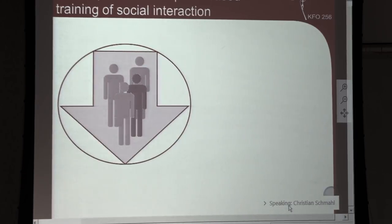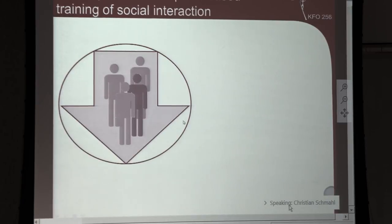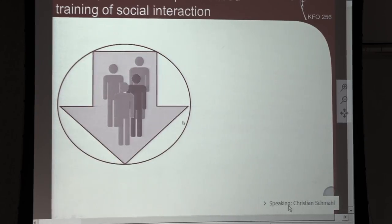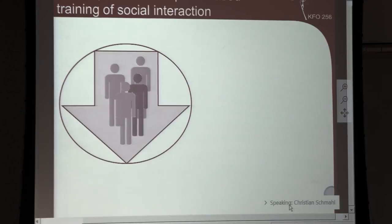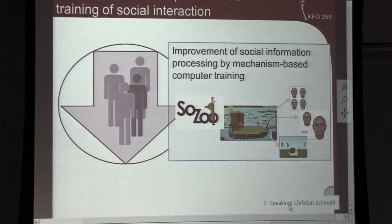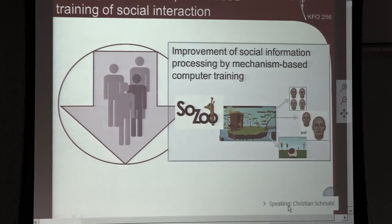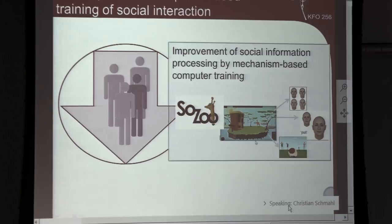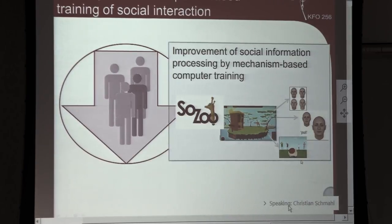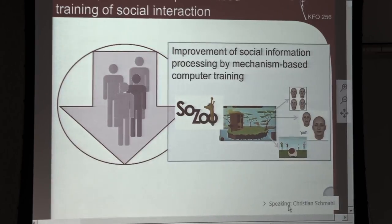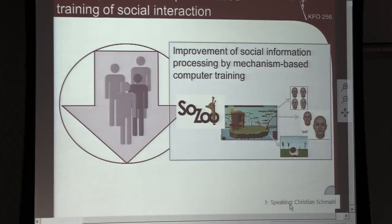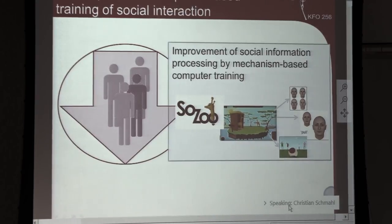How can social information processing be improved? A mechanism-based computer training called Social Zoo was developed by Martin Bohus and colleagues. Participants learn social interaction skills — reacting to social feedback, approaching instead of avoiding — in a playful internet-based format. We are currently evaluating this.